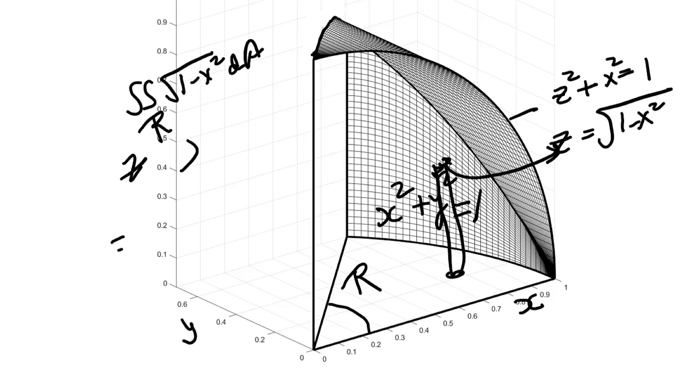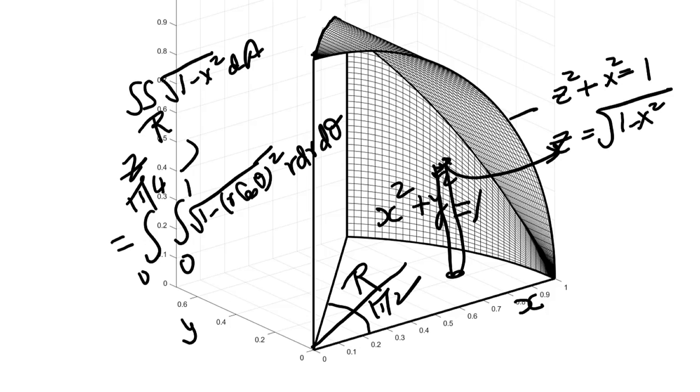If we switch to polars, x is r cosine theta, so we will have square root of one minus r squared cosine squared theta times r dr d theta. Theta will go from 0 to pi over 4 and r from 0 to 1. So let's go ahead and calculate this integral.